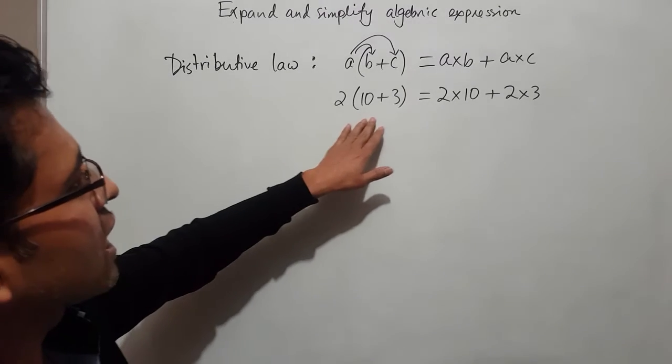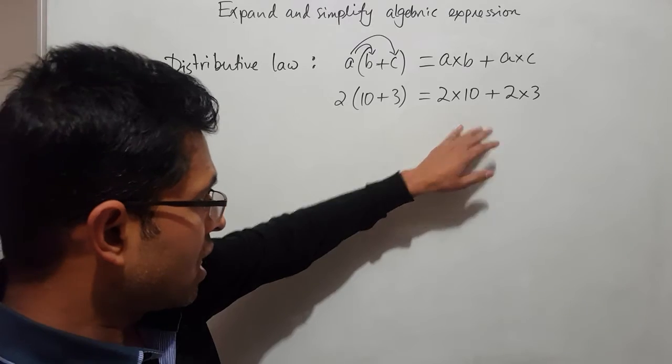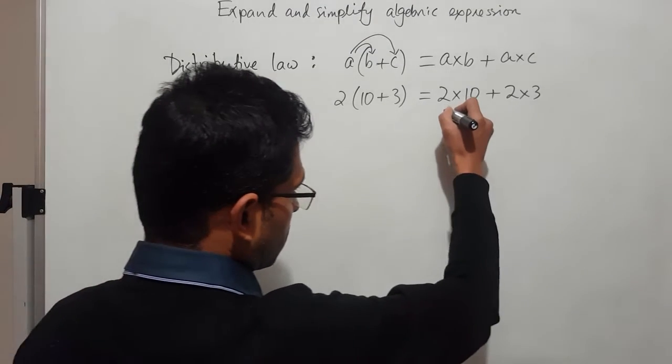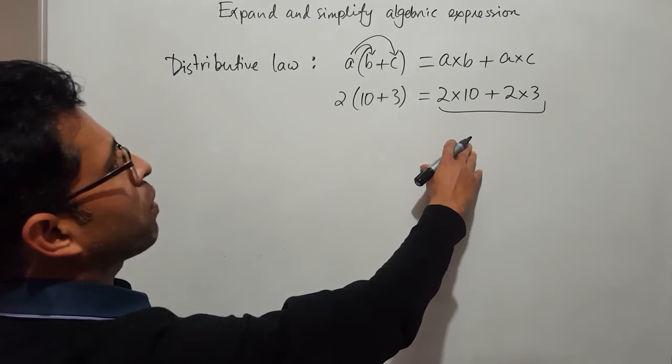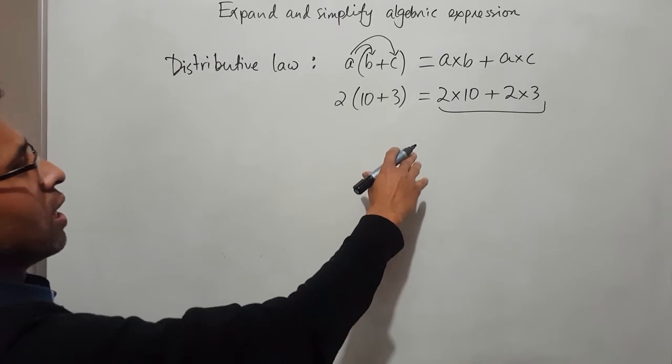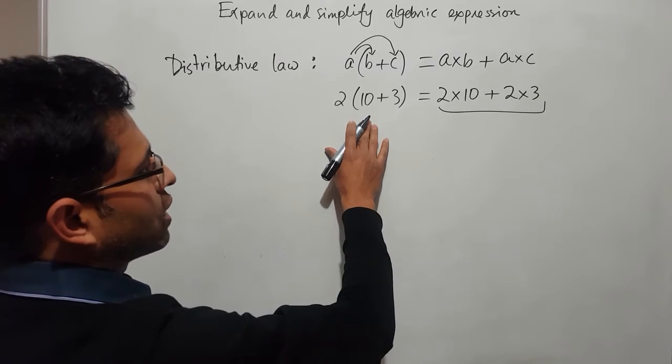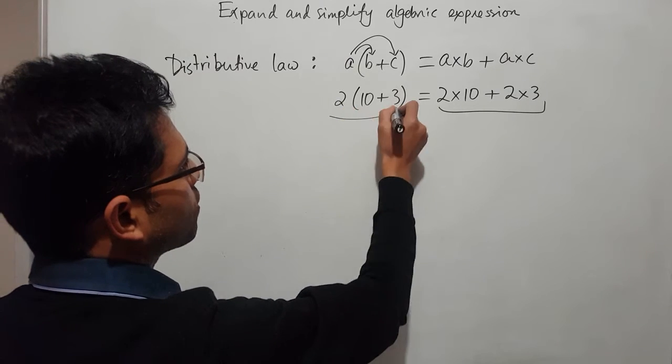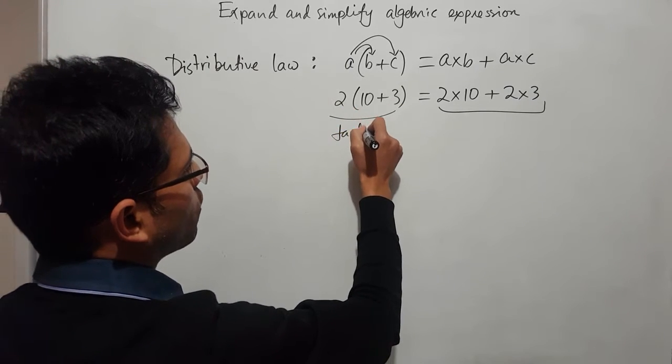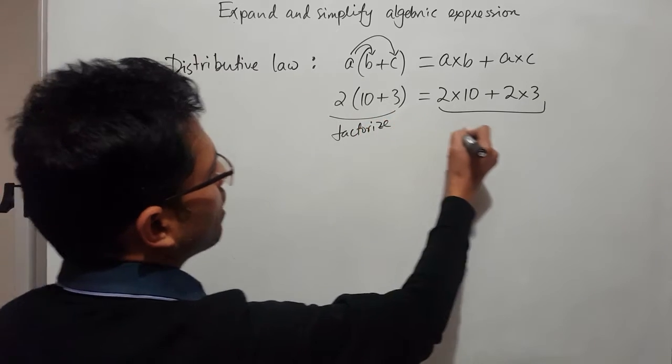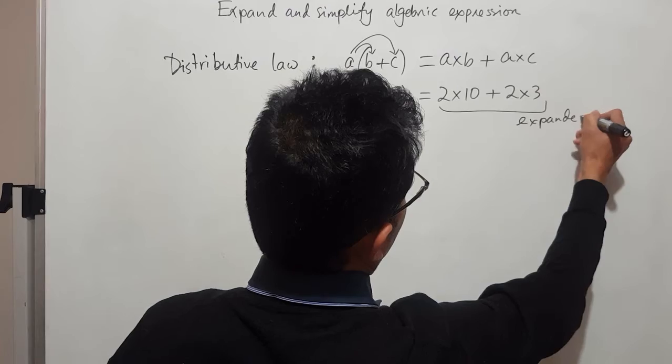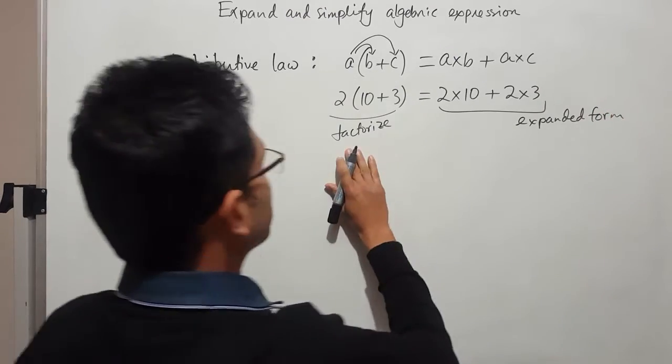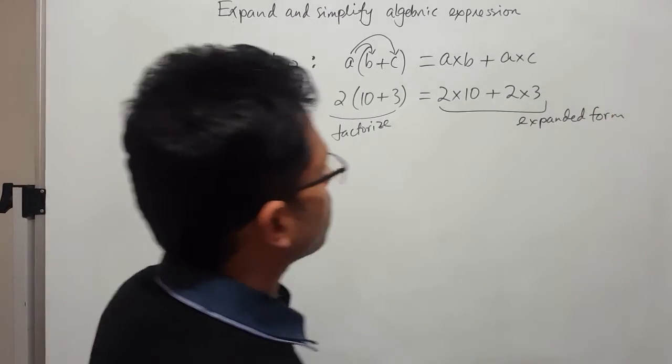But we are just expressing in different ways. And this way of expression is expanded form. So we are expanding, and this is the factorized form. This is factorized form and this is expanded form.